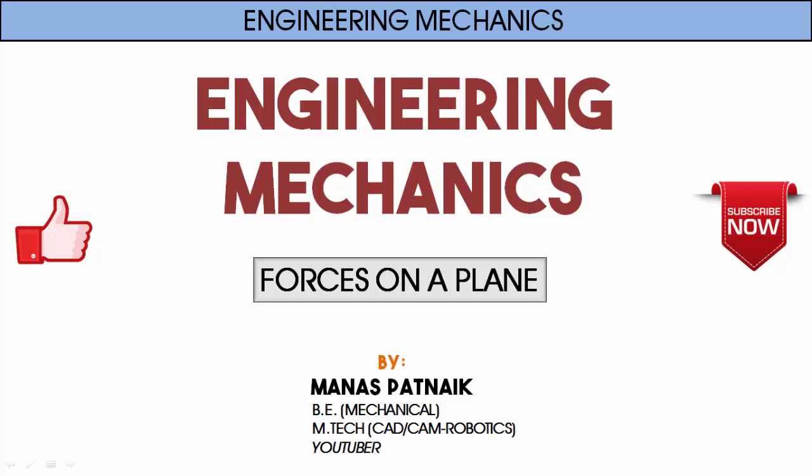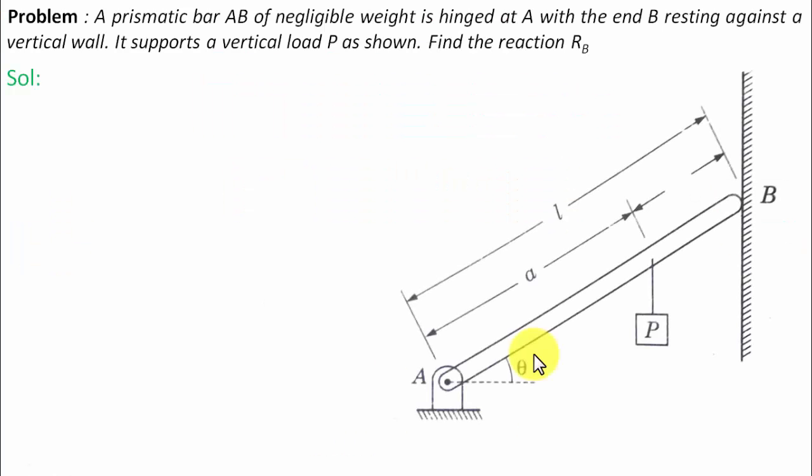Hi there guys, hope you're doing well. This is your friend and tutor Manas. Let's see what this problem has in store. A prismatic bar AB of negligible weight is hinged at A with end B resting against a vertical wall. It supports a vertical load P as shown. Find the reaction RB.